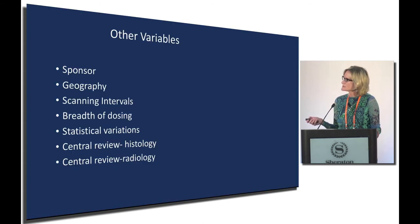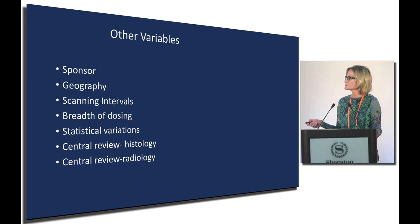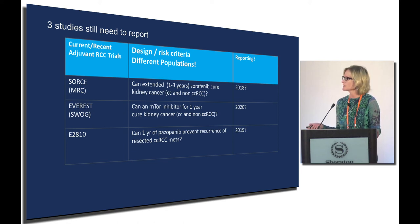Other reasons the studies could have been different include industry sponsor versus cooperative group, the geographic area studied, how frequently scans were done, and how much help was available for managing doses. We're not sure we'll ever know. Fortunately, there are a couple of trials yet to report: one looking at one to three years of sorafenib, the Everest trial looking at the mTOR inhibitor everolimus with drug level measurements, and a trial for patients who have had metastatic disease removed asking if a year of Votrient versus placebo could help prevent recurrence — results expected sometime next year.